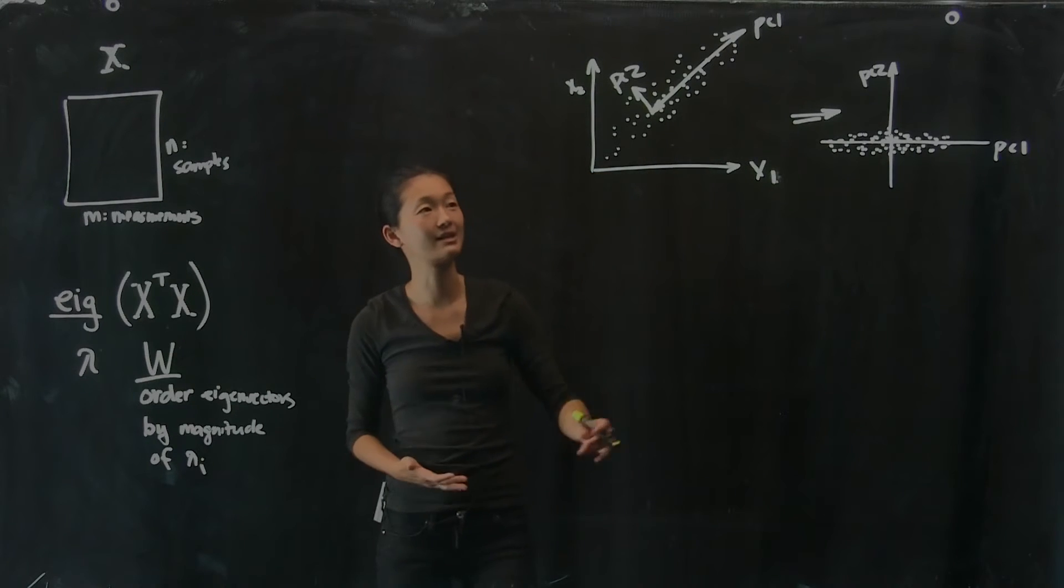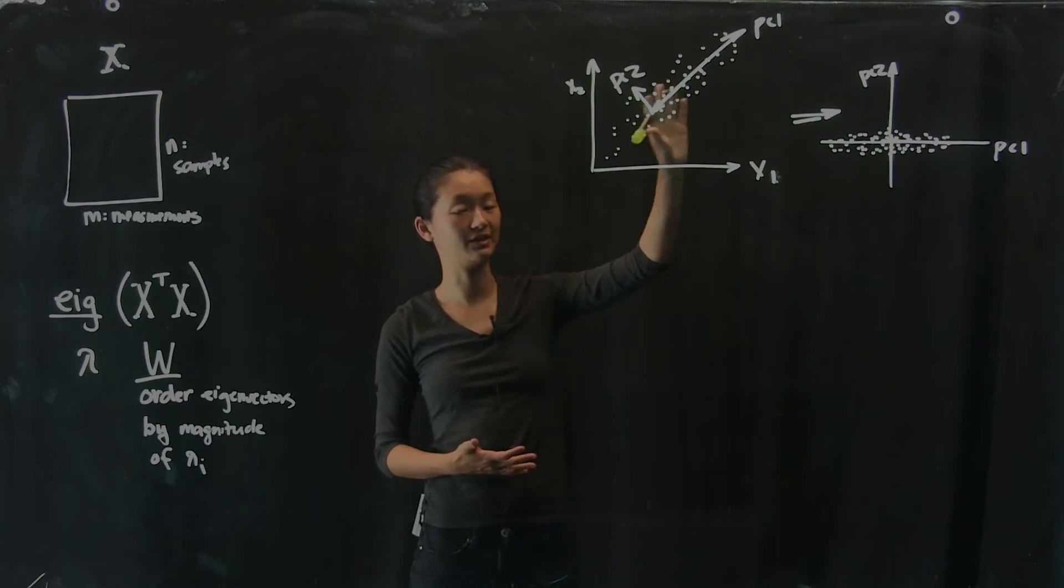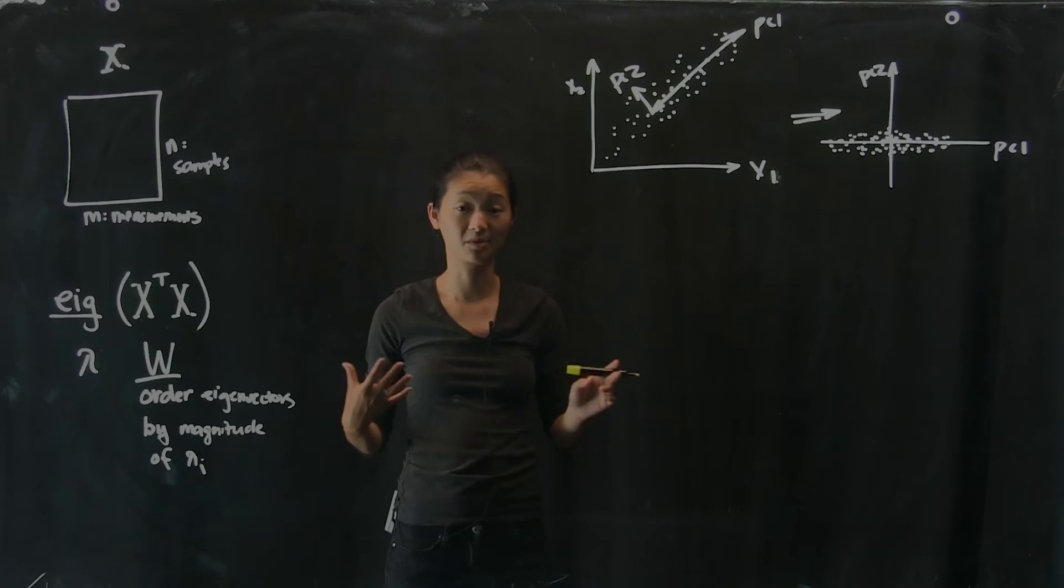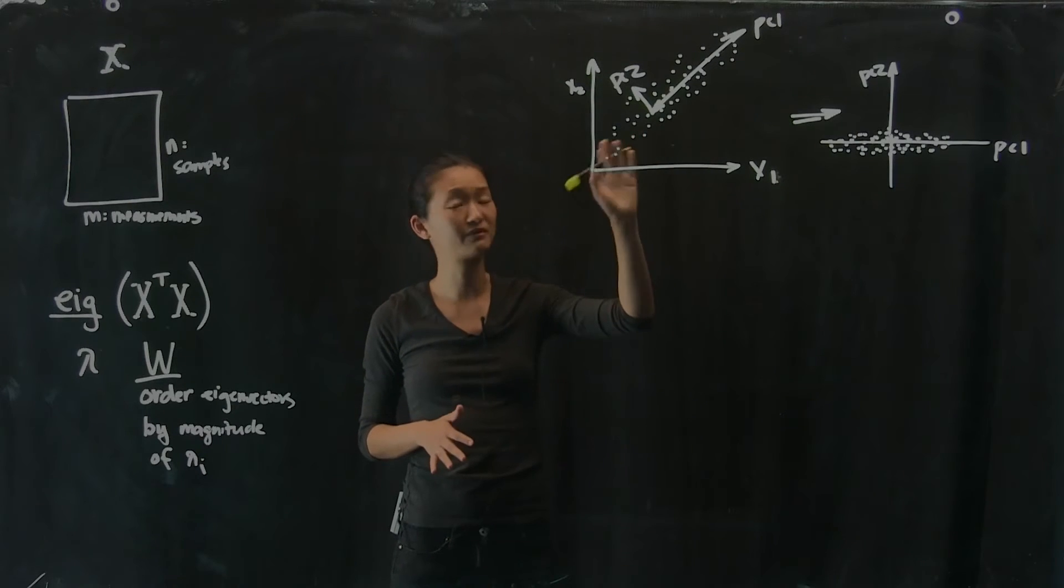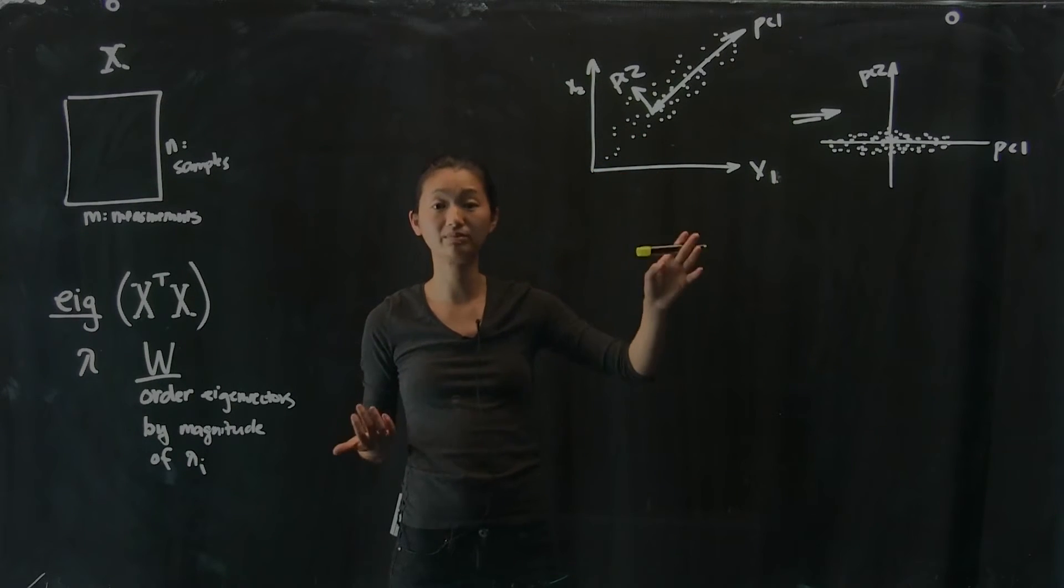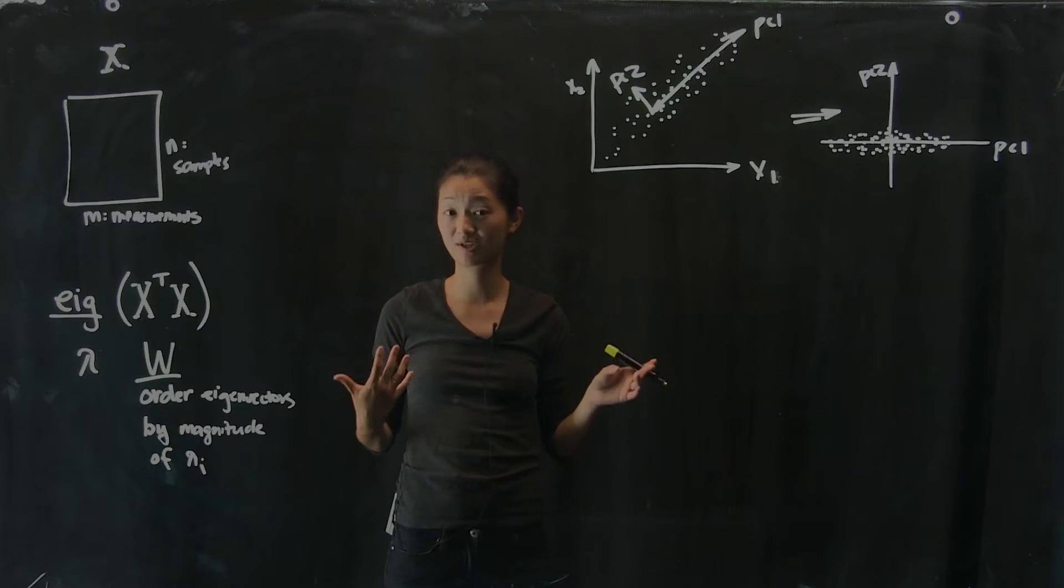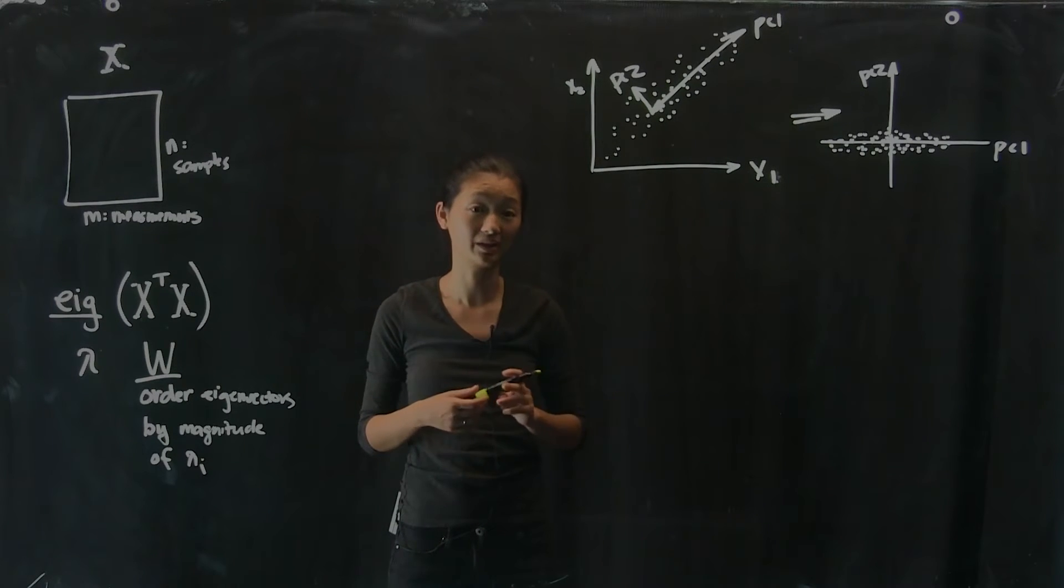And so you should keep in mind this kind of geometric interpretation of principal components analysis. It's a little hard to visualize this in higher dimensions. So we can probably do it with an ellipsoid of dots in three dimensions. But in much higher dimensions than that, it gets really difficult to visualize.